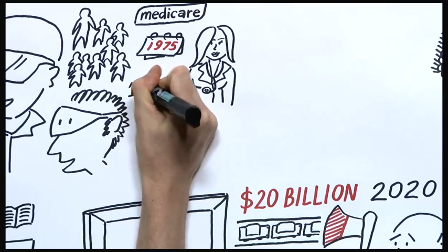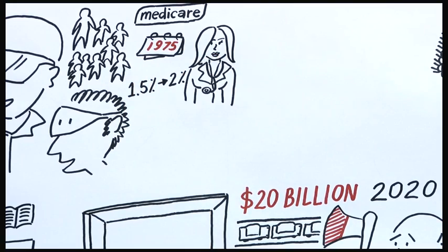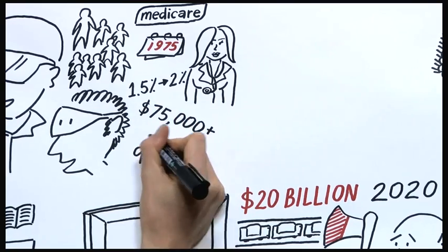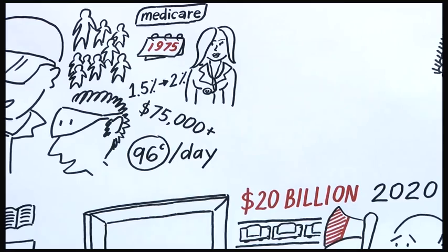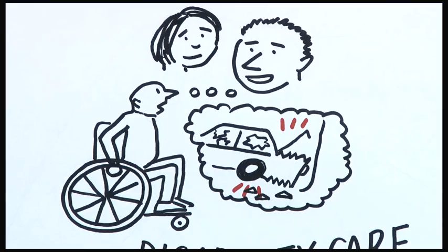To help pay for disability care, the Medicare levy will go from 1.5% to 2%. To put that into perspective, for someone earning $75,000 a year, that's an extra 96 cents a day. A small contribution that means an awful lot for our fellow Australians who need it most.